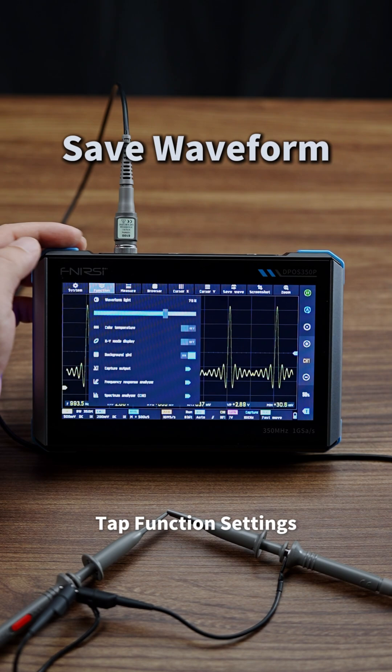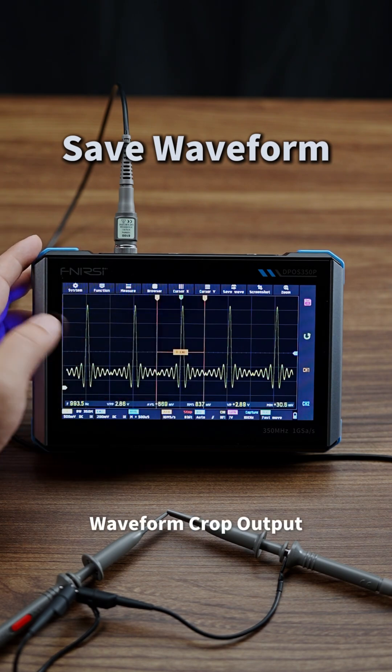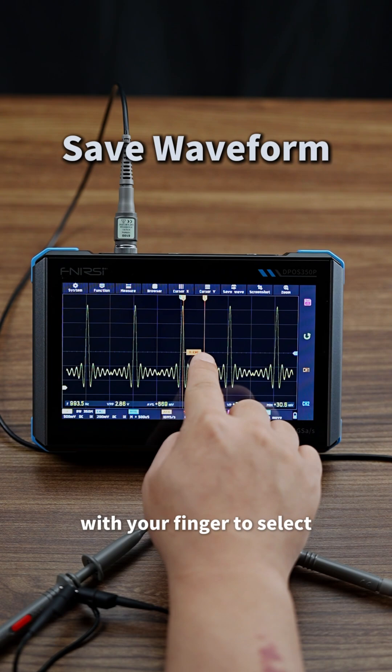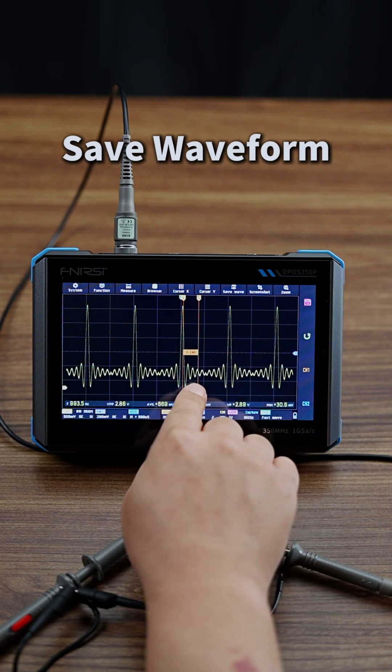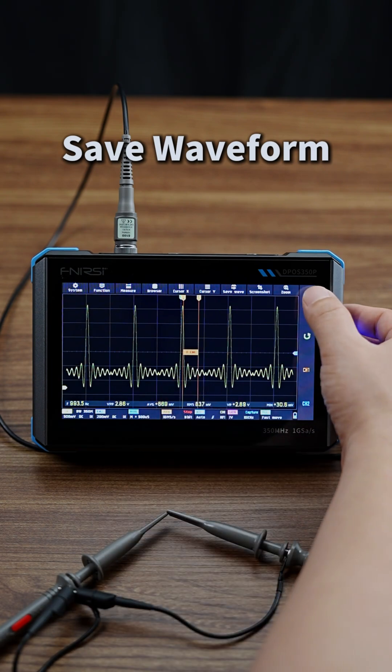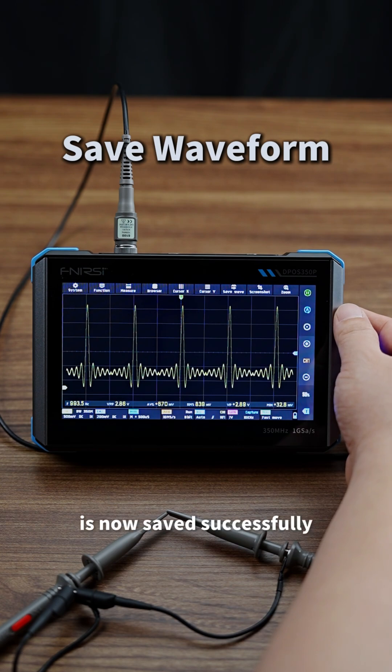Step 2: Tap Function Settings, select Waveform Crop Output. Step 3: Adjust the cursors with your finger to select the part to output. Tap the Save button on the right. The selected waveform is now saved successfully.